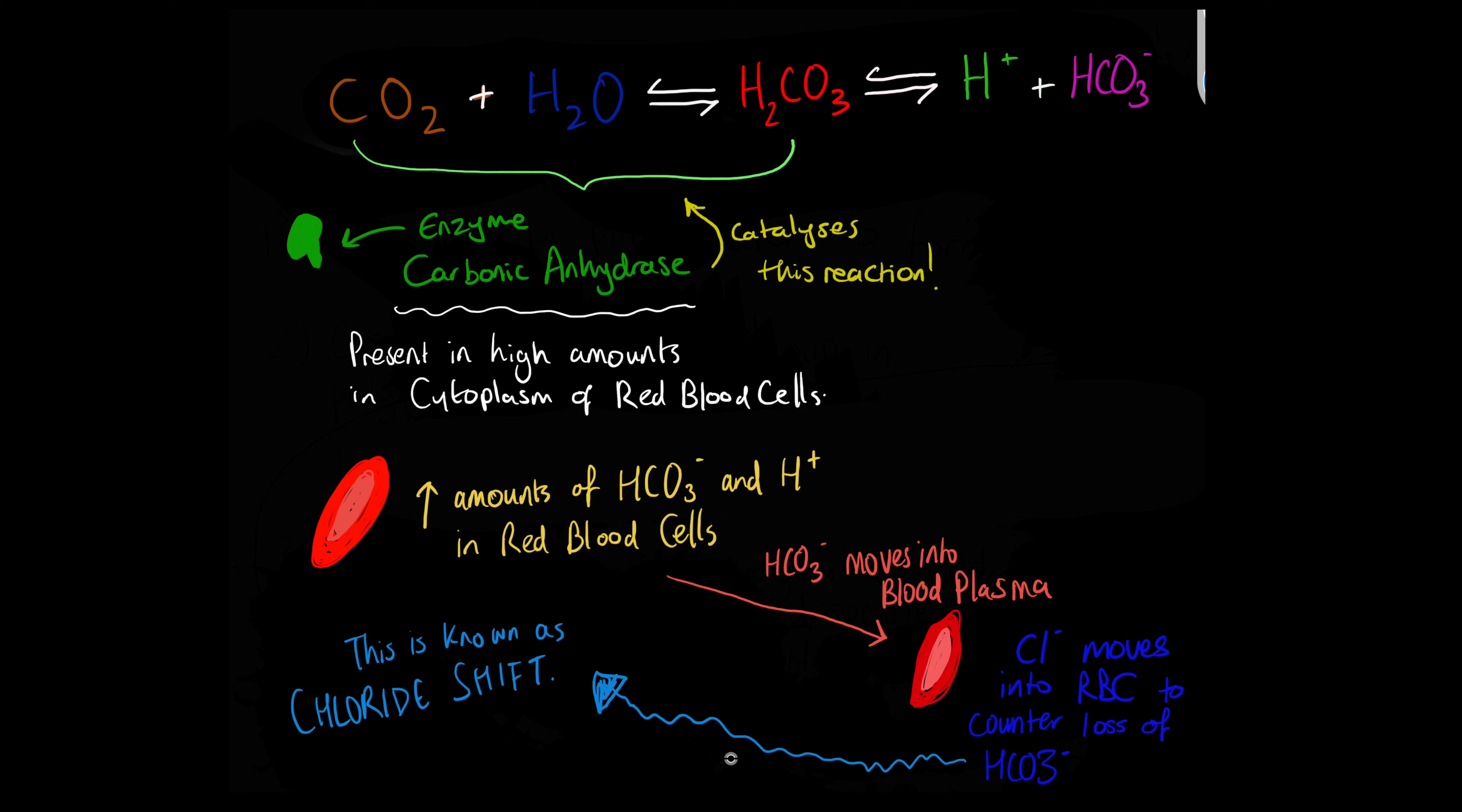The carbonic acid then dissociates to form hydrogen carbonate ions and hydrogen ions. The negatively charged hydrogen carbonate ions move out of the red blood cells into the plasma by diffusion down a concentration gradient, and negatively charged chloride ions move into the red blood cell, which maintains the electrical balance of the cell.